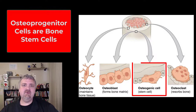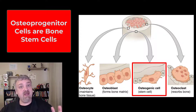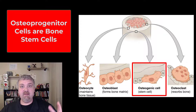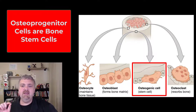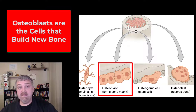Let's start with the osteogenic cell — I call this the osteoprogenitor cell. It is a stem cell, a bone stem cell. Osteoprogenitor cells make new bone. If you need to build bone — whether you're building bone from an embryonic cartilage skeleton in your mother's womb, repairing a fracture, or bones are growing in some way — these osteoprogenitor cells will become osteoblasts.